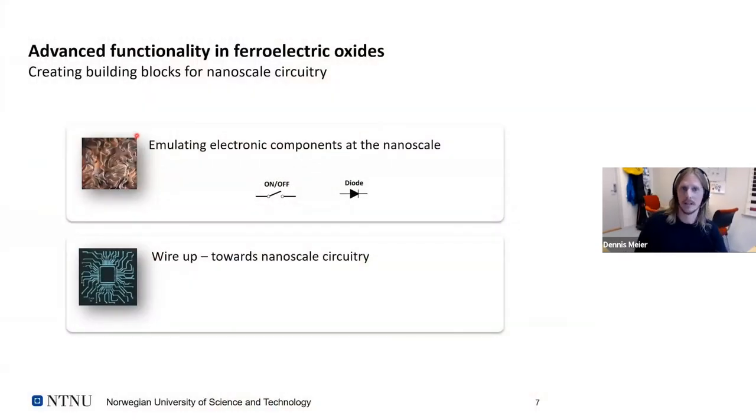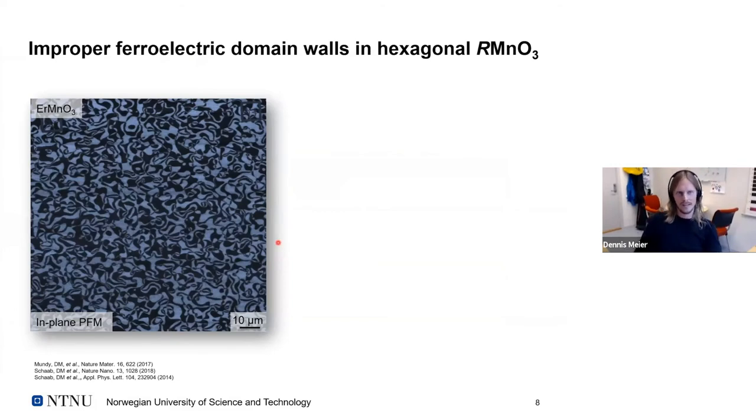I will first talk a little bit about emulating electronic components at the nanoscale. What is possible right now? And in the second part, I would propose an idea that we could use to then wire up these domain walls. So our model system is the so-called improper ferroelectric erbium manganite, or the hexagonal manganite in general. What you see on the left-hand side is the piezoresponse force microscopy image where dark means polarization pointing upwards, bright means polarization pointing downwards. And what you can see right away is that the material does not really care about the polarization direction. The domain walls are meandering around as if there would be not a uniaxial ferroelectric.